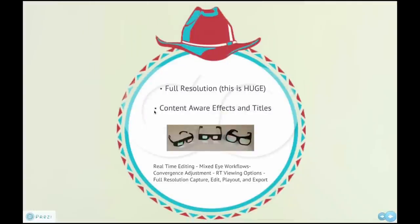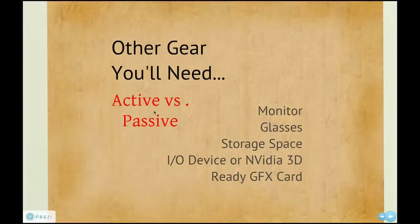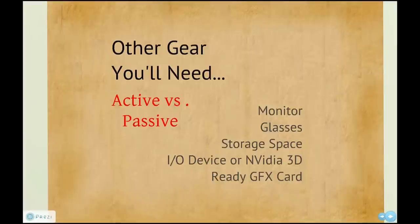We have real-time editing, mixed eye workflows, convergence adjustment, and playout. There really is a full feature set for 3D here. If you've been waiting to dip your toe in the 3D pool, now is really the time to jump in. If you're going to cut 3D, you'll need to decide whether you want to go active versus passive for your monitor and corresponding glasses. Storage space is often overlooked — when you shoot stereo you'll have two eyes, and you may want to generate a new file from heavily compressed footage in DNxHD or ProRes, so keep in mind you'll have a lot of extra storage needs. A less expensive approach is a sanctioned NVIDIA 3D graphics card, and Media Composer can use the DVI or DisplayPort output to push a 3D monitor.